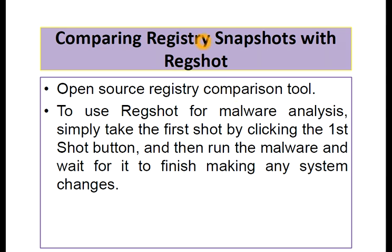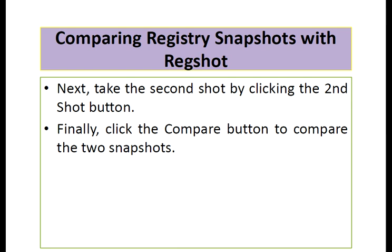To compare registry snapshots with Regshot, first open the source registry comparison tool. To use Regshot for malware analysis, simply take the first shot by clicking the first shot button. Then run the malware and wait for it to finish making any system changes. Then take the second shot by clicking the second shot button.